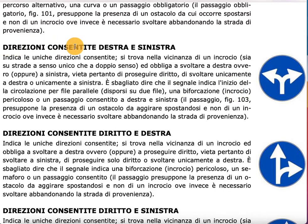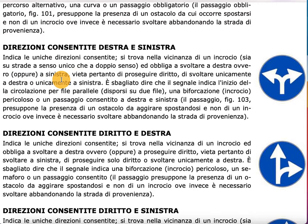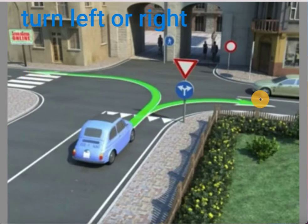The first thing we want to talk about is direzione consentiti destra e sinistra. This means there are two directions which are basically allowed for us to follow. This sign — direzione consentiti — indica le uniche direzioni consentite. Si trova nella vicinanza di un incrocio sia su strada a senso unico che doppio senso, ed obbliga a svoltare a destra oppure a sinistra, e vieta pertanto di proseguire diritto.